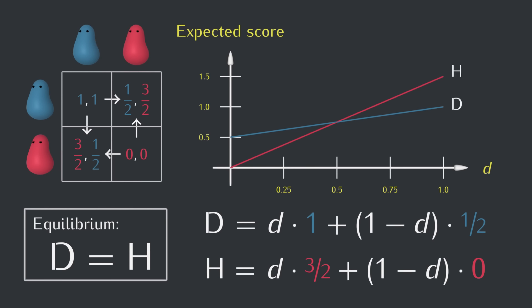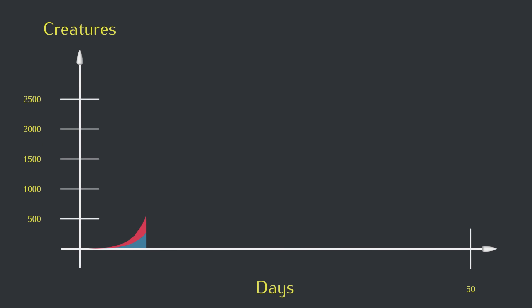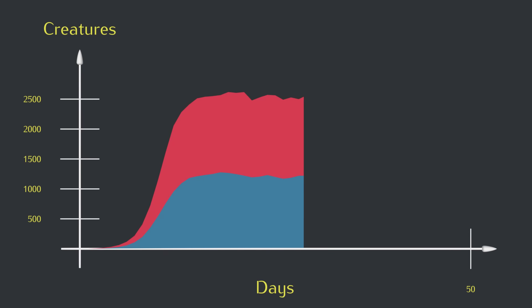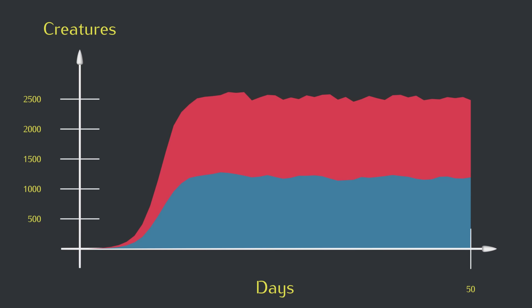The expected scores are equal when the graphed lines cross, and indeed the equilibrium condition is met at 50% doves. And if we run a simulation with way more creatures than before, unfortunately too many to animate, the randomness smooths out a bit and we can see that the prediction is true.